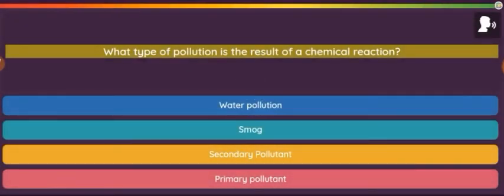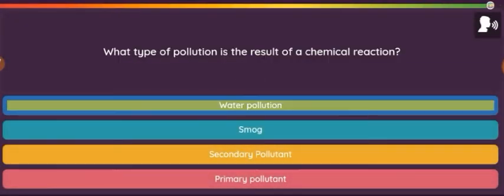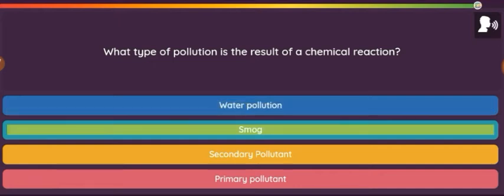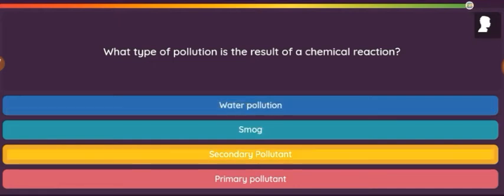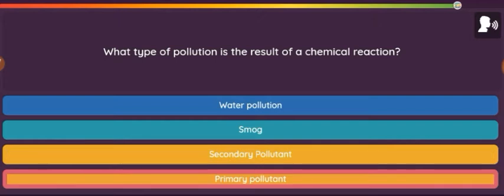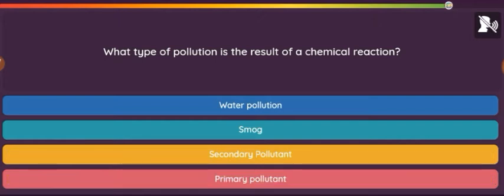Question: What type of pollution is the result of a chemical reaction? Option 1: Water pollution. Option 2: Smog. Option 3: Secondary pollutant. Option 4: Primary pollutant.